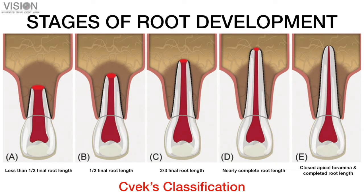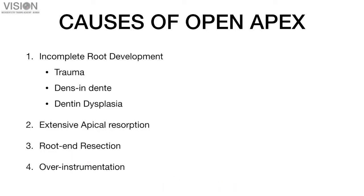Before we discuss the management of different situations, let's have a look at the various stages of root development. According to Svek's classification, there are five stages of root development: the first stage is less than half of final root length, the second at half of final root length, the third at two-thirds final root length, the fourth at nearly complete root length formation, and the fifth at the closed apical foramina and completed root length. During the formation of these roots, anytime the patient can undergo trauma or a situation requiring treatment of that particular tooth.